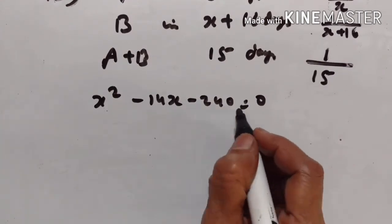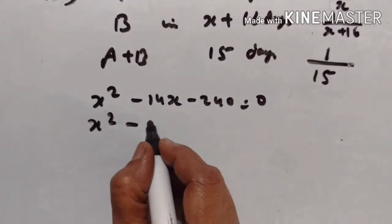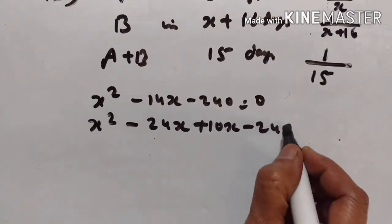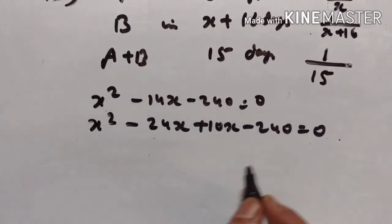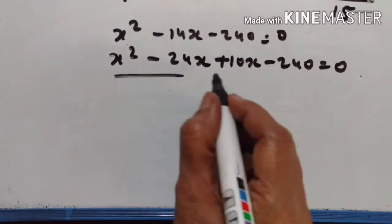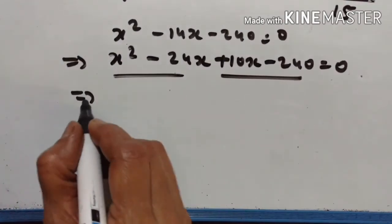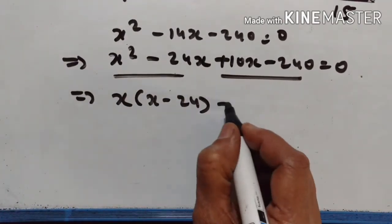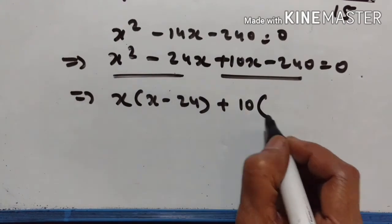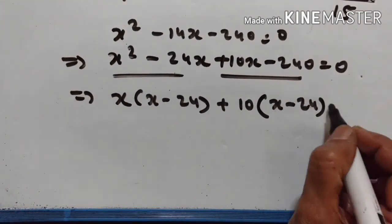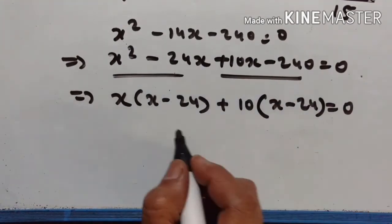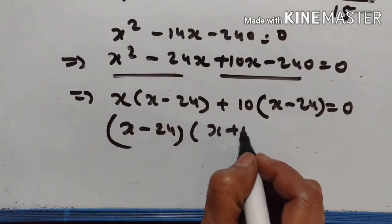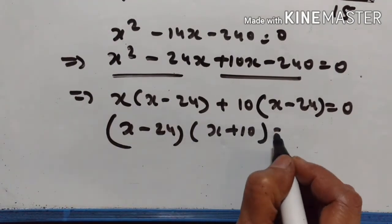Factoring: we split minus 14x as minus 24x plus 10x, giving x squared minus 24x plus 10x minus 240 equals zero. This factors as x(x minus 24) plus 10(x minus 24) equals zero, so (x minus 24)(x plus 10) equals zero.